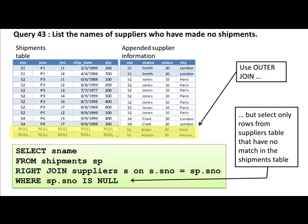You can use the fact that in an outer join the table for which there are no matches will have null values. You can use that to answer queries like these — suppliers who have made shipments or suppliers who have not made shipments. When you say no shipments, do an outer join and then select those rows for which there is no match, finding that out by testing for null. When you test for null, you do not say WHERE SP.S_number = NULL. Null is a special value that is not equal to anything — you have to say IS NULL. Null does not even match null. The only way to test if something is null is by using IS NULL.